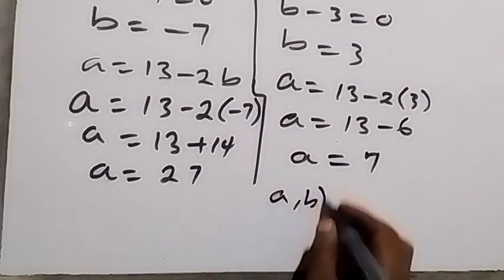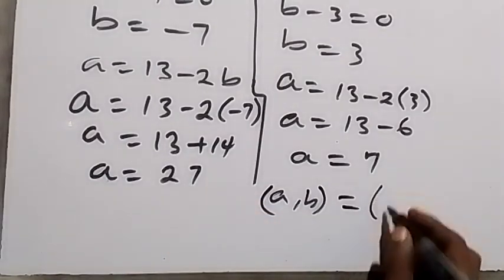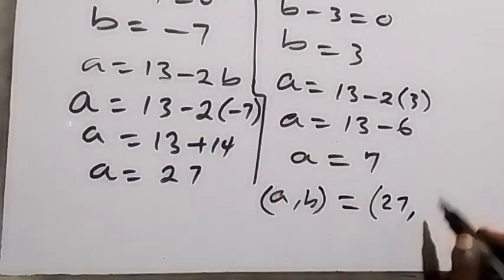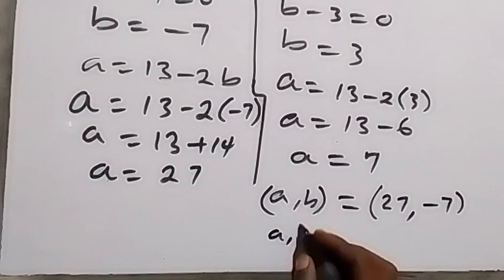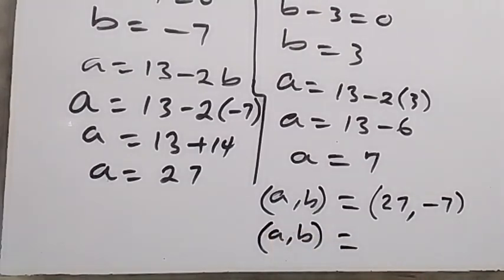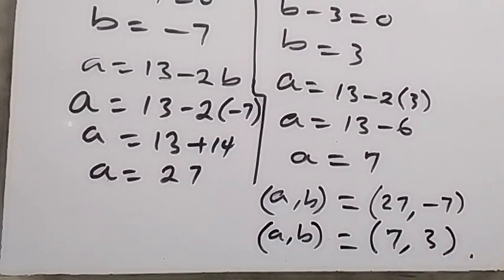Therefore we can conclude that the sets of possible solutions are: a comma b equals 27 comma minus 7, and also the next set, a comma b equals 7 comma 3.